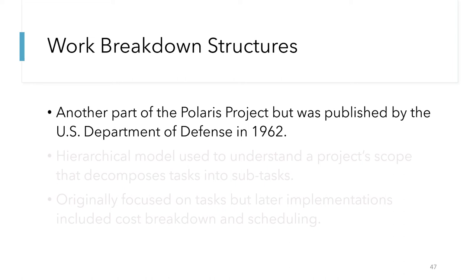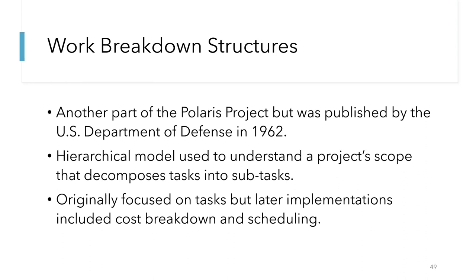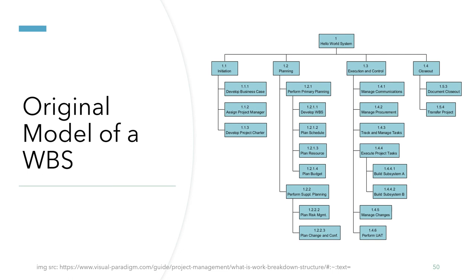Another important tool for project management is the work breakdown structure. The work breakdown was developed by Frederick Taylor, but was improved and used during the Polaris project. This technique became very effective for project management and was published by the Department of Defense in 1962. A work breakdown structure is basically a hierarchical model used to understand a project's scope by decomposing tasks into smaller subtasks. Older work breakdown structures looked like hierarchical trees, while more modern ones tend to look more logical and also include features such as cost breakdown, process ordering, and scheduling tasks.